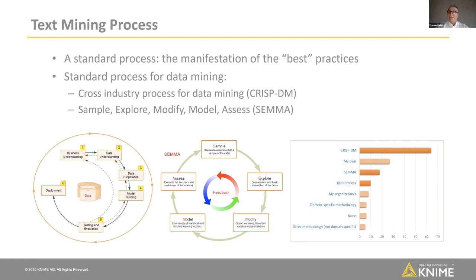In data mining and analytics there are several popular standardized processes — manifestations of best practices as to how to do analytics and predictive analytics in particular. CRISP-DM has been a very popular one because it's cross-industry and a lot of organizations and data scientists have been adopting it. This CRISP-DM process, which is a six-step logical intuitive process, is readily applicable to textual content. The difference is that steps two and three — data understanding and data preparation — are going to be a lot more involved than they would be in a standard data mining project.